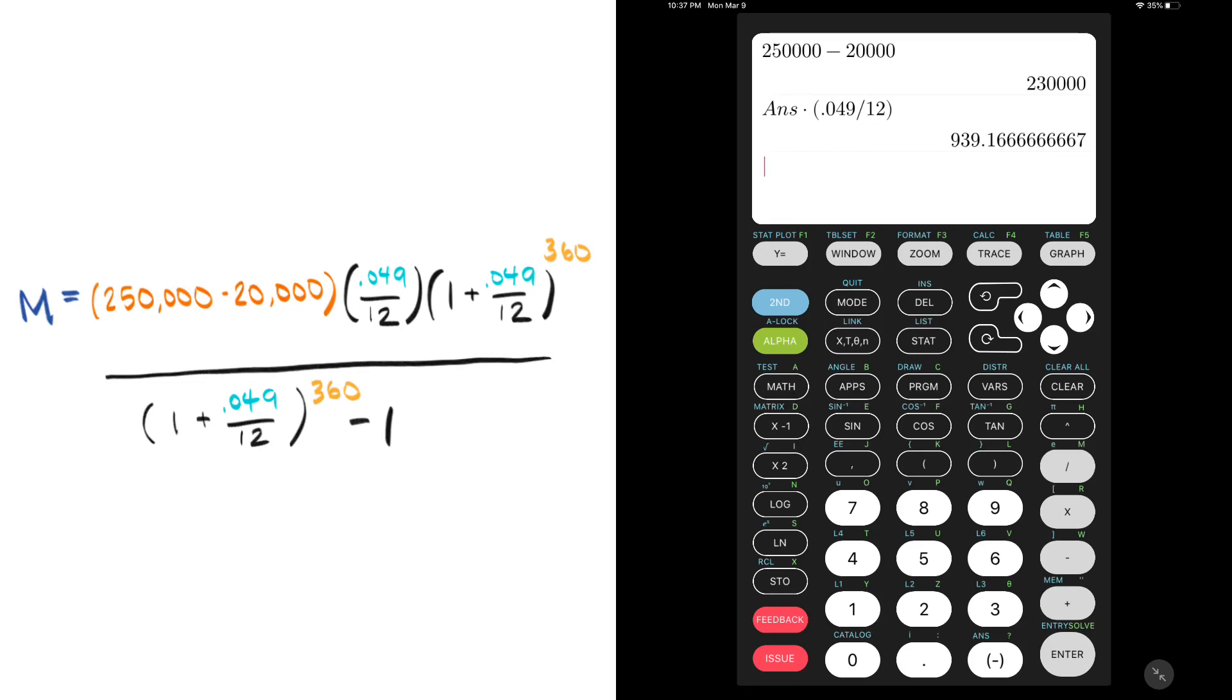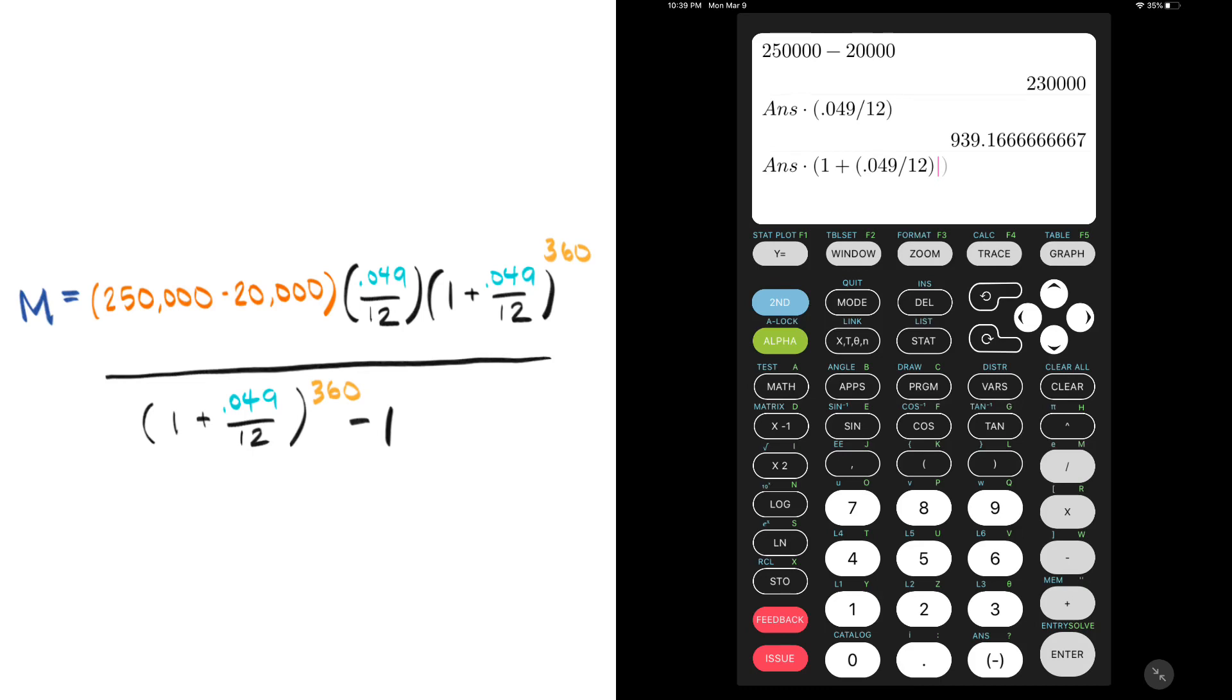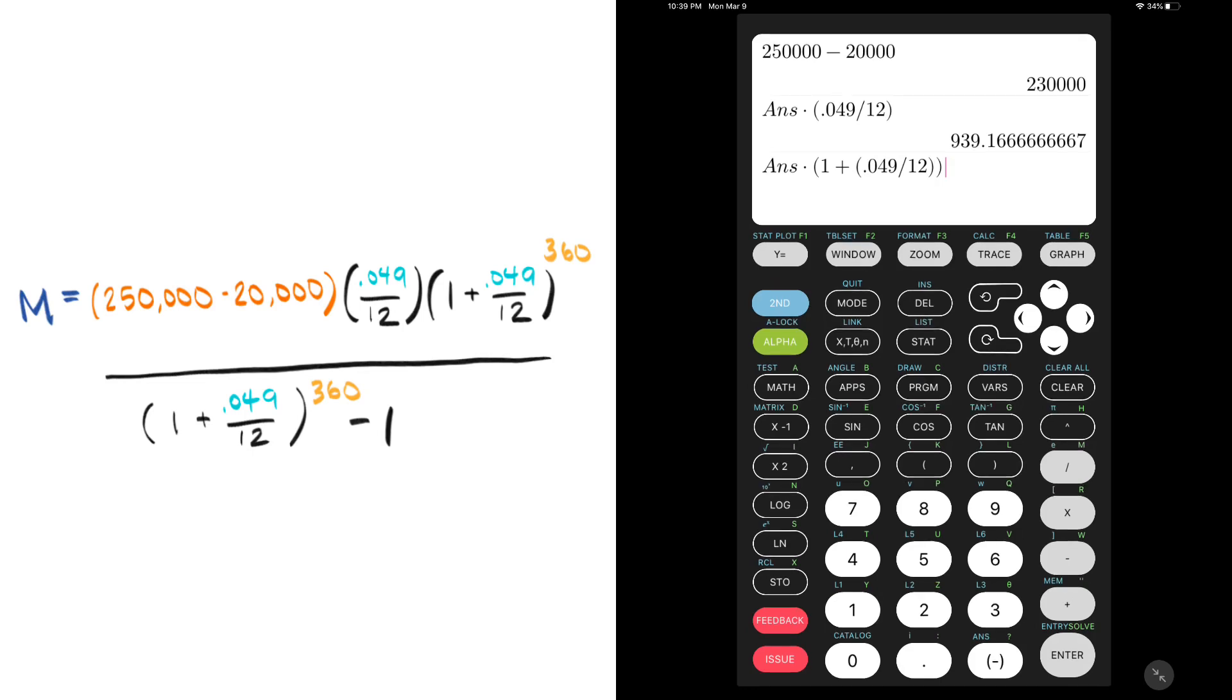The last part in our numerator is to add 1 to our monthly rate and take it to the 360th power. I can use that answer function again to just continue multiplying and then open parentheses again with 1 plus our monthly rate. Looks like we'll need another set of parentheses. So we can type in another open parentheses 0.049 divided by 12 again and then two closed parentheses, one for the monthly rate and another for the plus 1.